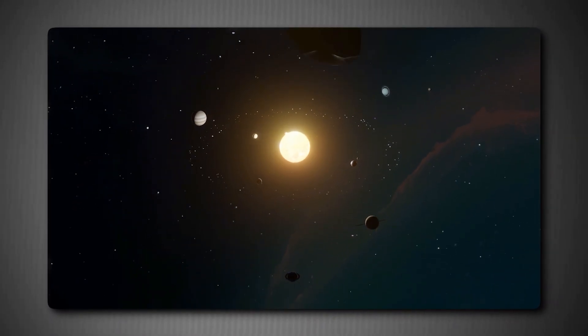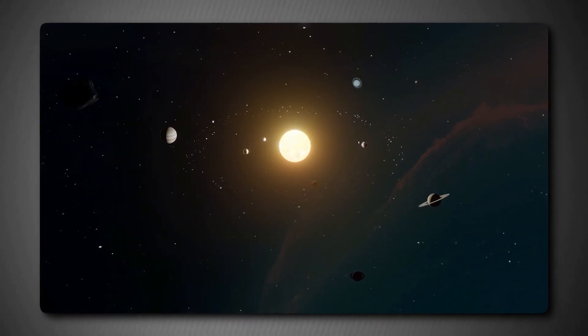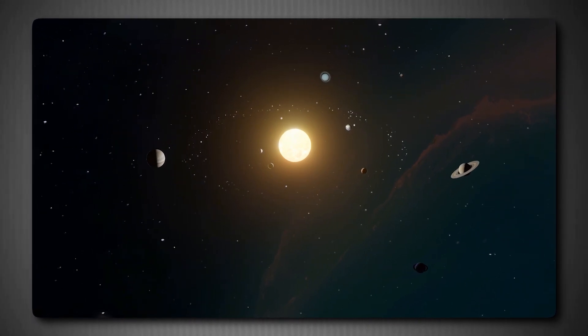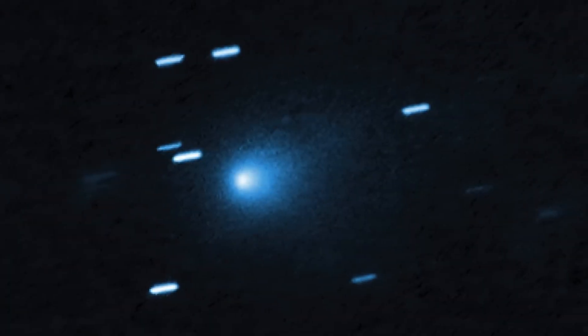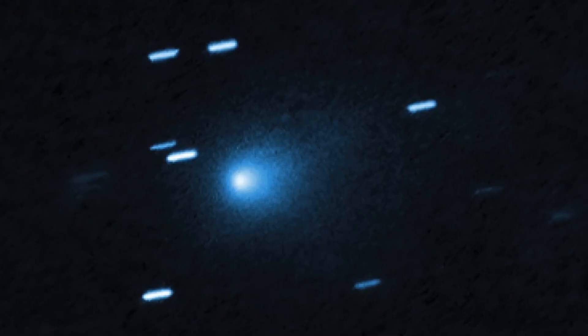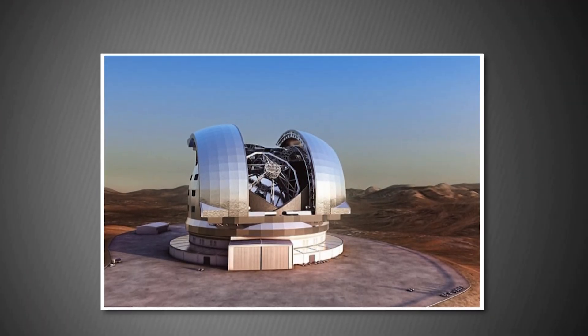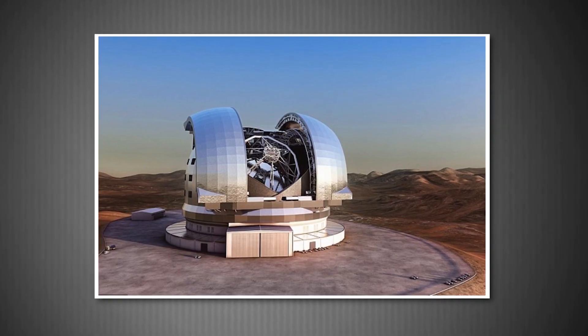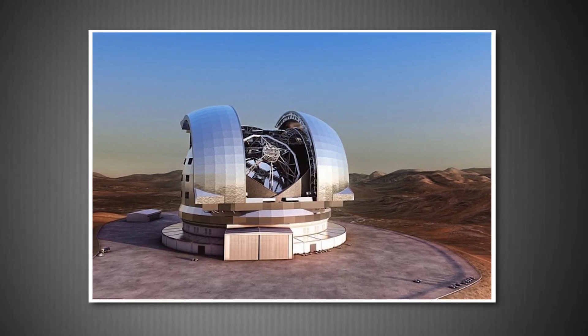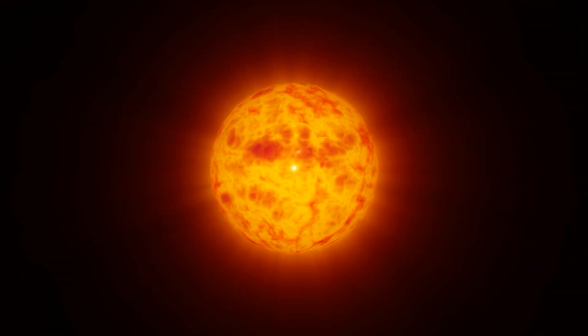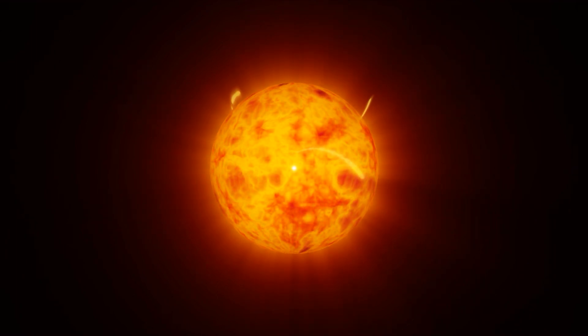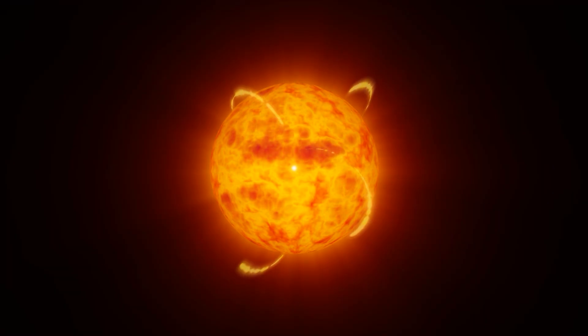The comet will pass approximately 1.36 astronomical units from our star. That's about 126 million miles, placing it just inside the orbit of Mars. At this point, 3I ATLAS will be traveling at its maximum velocity of 42 miles per second. That's fast enough to travel from New York to Los Angeles in less than a minute. But here's the frustrating part. From Earth's perspective, the comet will be on the other side of the sun during this close approach. We won't be able to observe it directly from Earth-based telescopes. The sun's glare will completely obscure it. It's like trying to spot a candle flame while staring directly at a stadium floodlight.